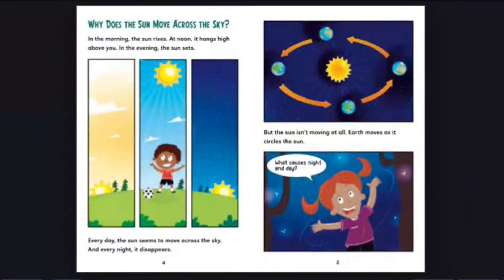Why does the sun move across the sky? In the morning, the sun rises. At noon, it hangs high above you. In the evening, the sun sets. Every day, the sun seems to move across the sky. And every night, it disappears.